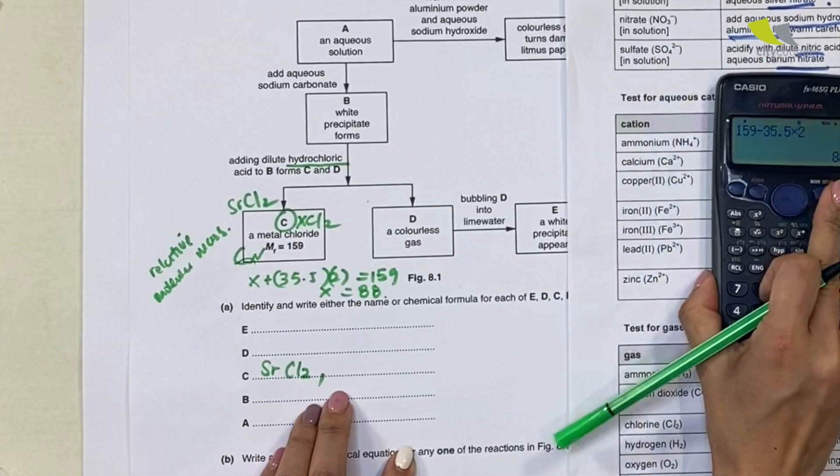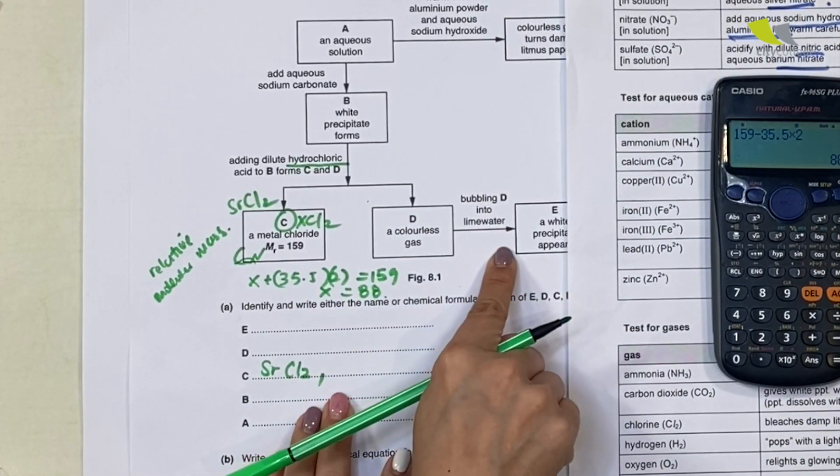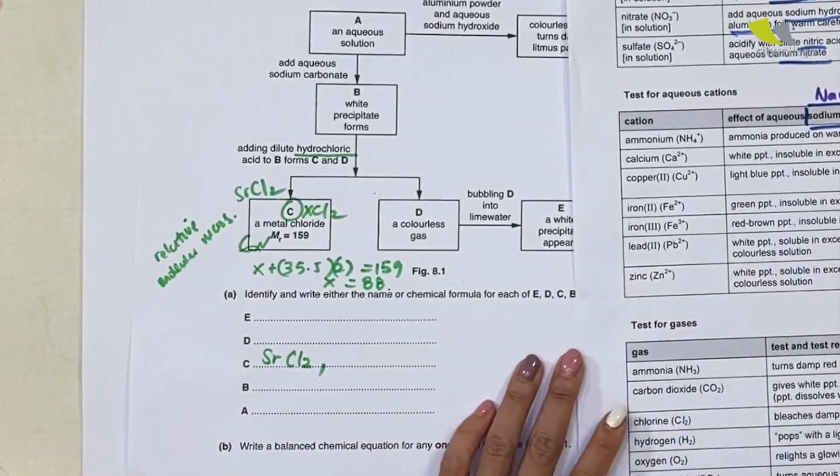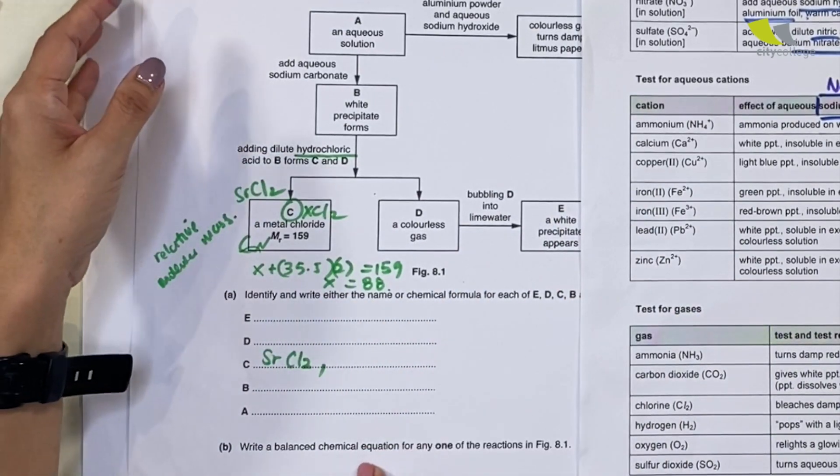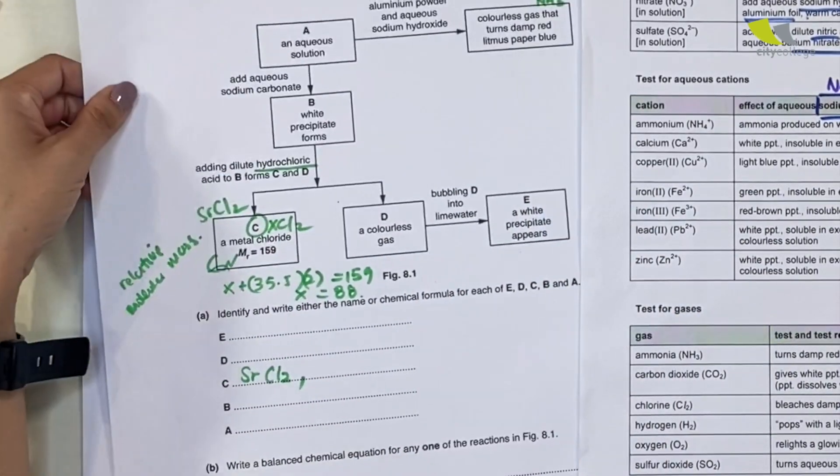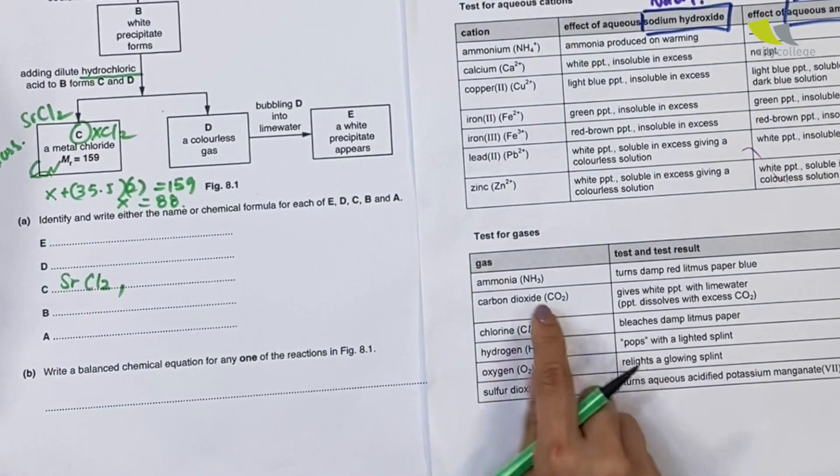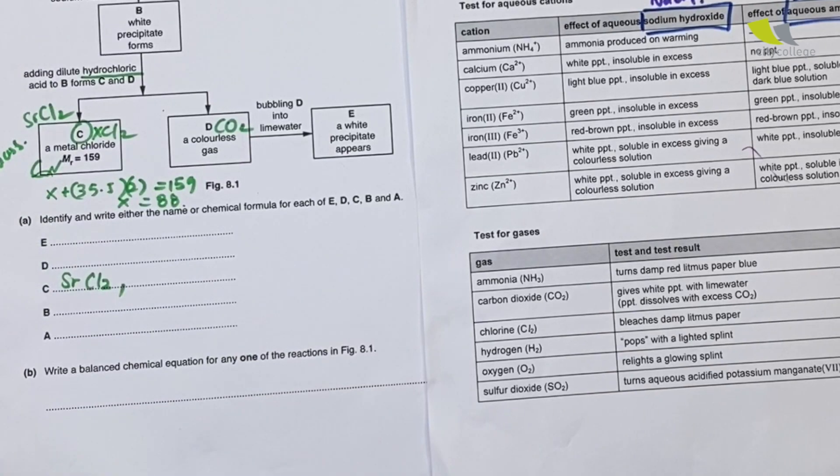Now they go on: colorless gas here, bubble into lime water, so I get a white precipitate. Who is this white precipitate?